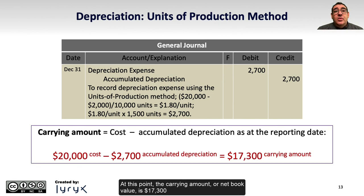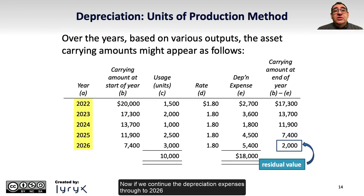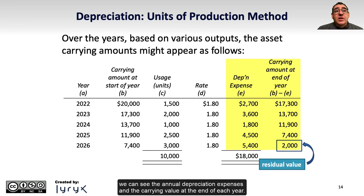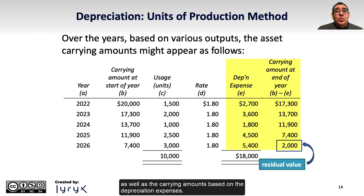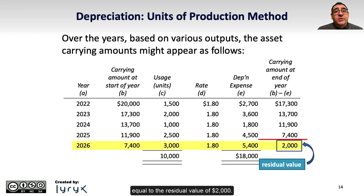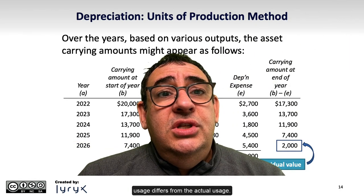At this point, the carrying amount, or net book value, is $17,300, calculated as the original $20,000 cost less $2,700 in accumulated depreciation up to December 31st. If we continue the depreciation expenses through to 2026, applying the $1.80 rate per unit to the actual units over the five years, we can see the annual depreciation expenses and the carrying value at the end of each year. You should pause the video to ensure you can calculate the depreciation expense each year, as well as the carrying amounts. Based on the actual usage shown, we end up with a carrying value at the end of five years equal to the residual value of $2,000, but that might not always be the case, especially if estimated usage differs from actual usage.